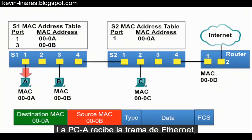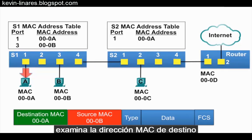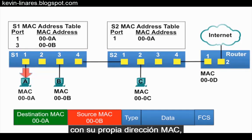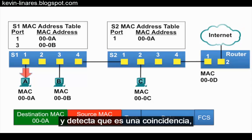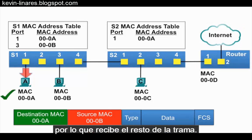PCA receives the Ethernet frame, examines the destination MAC address against its own MAC address, and notices it is a match, so it receives the rest of the frame.